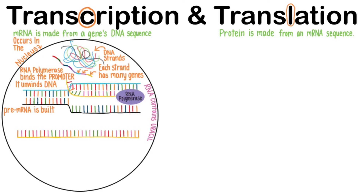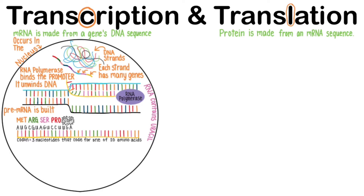This sequence is composed of codons — three nucleotides that code for one of the 20 different kinds of amino acids. All mRNA transcripts start with the codon AUG, which codes for the amino acid methionine. In my example, arginine is next, then serine, then proline. But a stop codon appears right in the middle of the transcript.